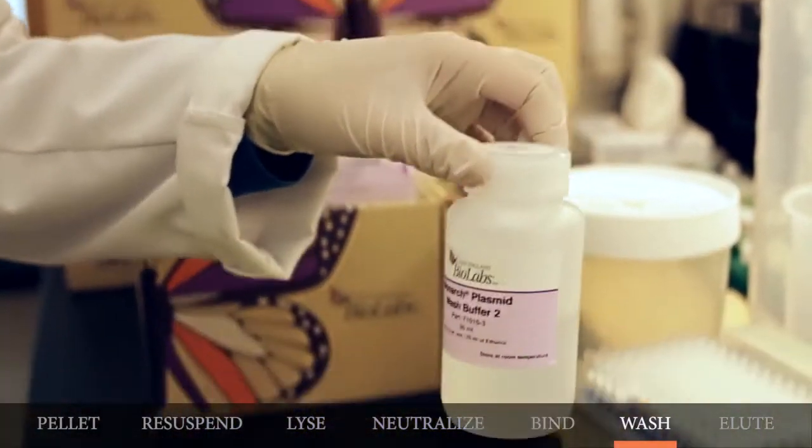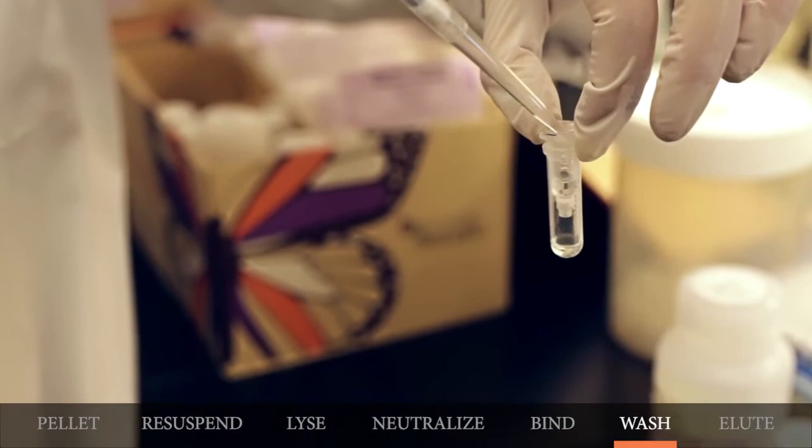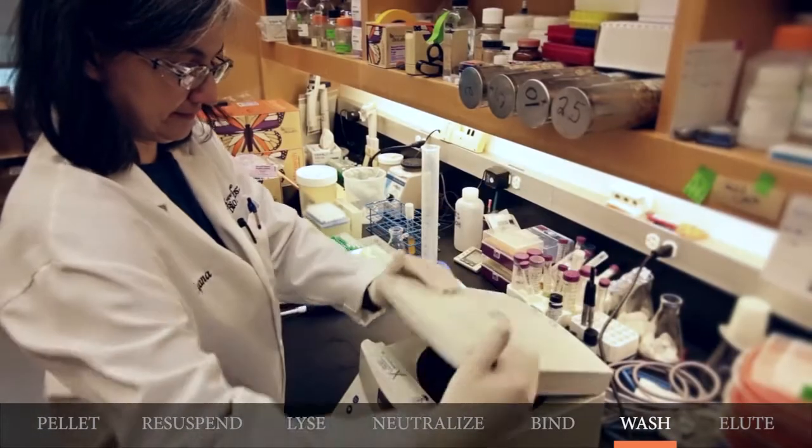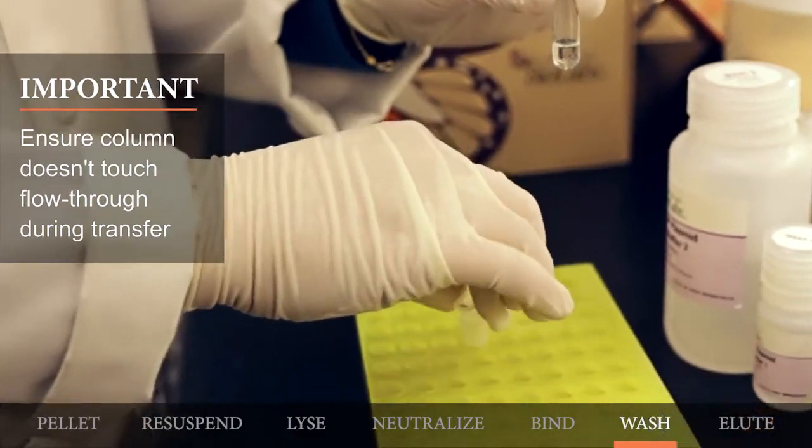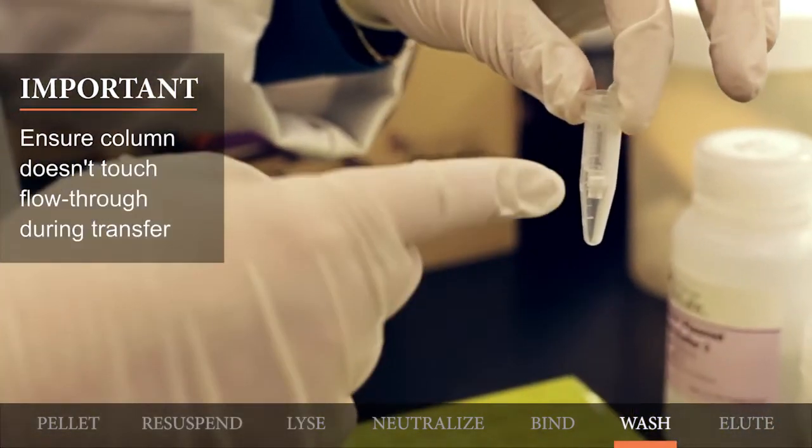Now add 400 microliters of the Plasmid Wash Buffer 2 and centrifuge for one minute. You will transfer the column to a clean microcentrifuge tube, making sure that the tip of the column does not come into contact with the flow-through.